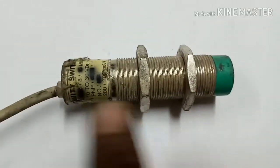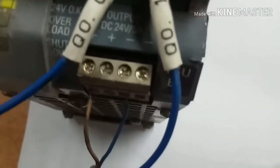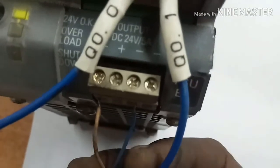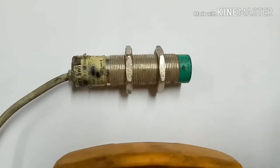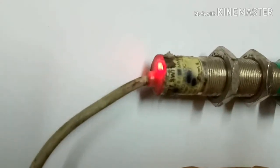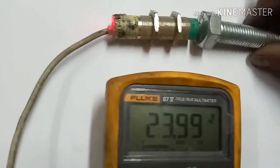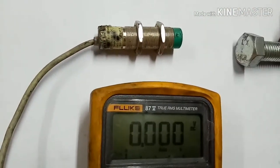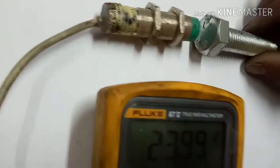This is the PNP. I will show you the connection. This is the brown color wire from 24V plus and blue from negative. Black is output. I will show you the color code. I will show you the metal piece. I will show you the output of 24V. This is the PNP proximity sensor.